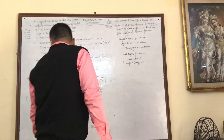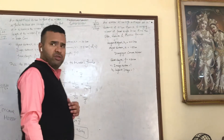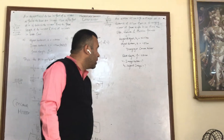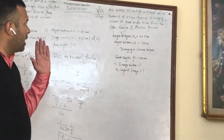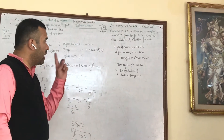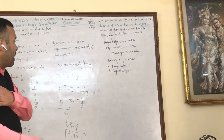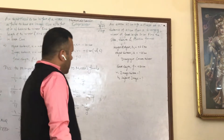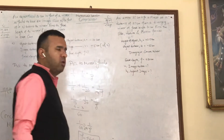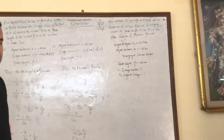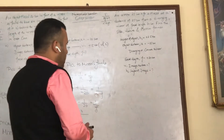The next question is again on page 209, question number 5, which says: an arrow 2.5 cm high is placed at a distance of 25 cm from a diverging mirror of focal length 20 cm. Find the size, nature, and position of the image formed. The given data: object height h1 = +2.5 cm, u = -25 cm (u is always negative). Diverging mirror means convex mirror; converging mirror means concave mirror. Focal length of convex mirror is positive, so f = +20 cm.